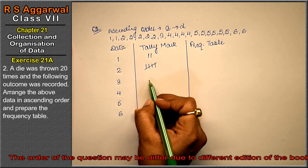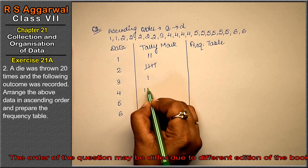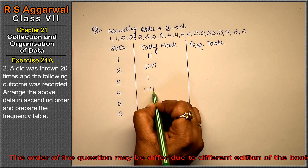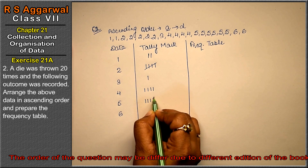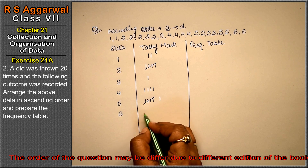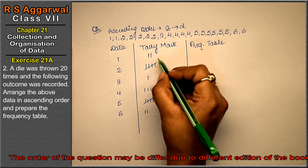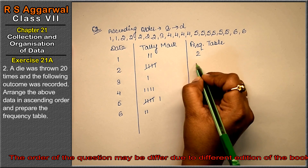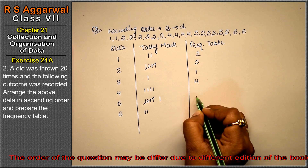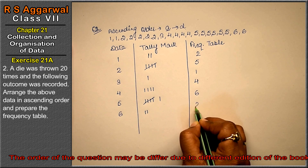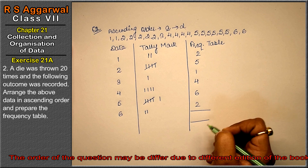Number 3 appeared 1 time. Number 4 appeared 4 times. Number 5 appeared 6 times. And number 6 appeared 2 times. So the frequencies are: 2, 5, 1, 4, 6, and 2. If you calculate the total, it should come to 20.